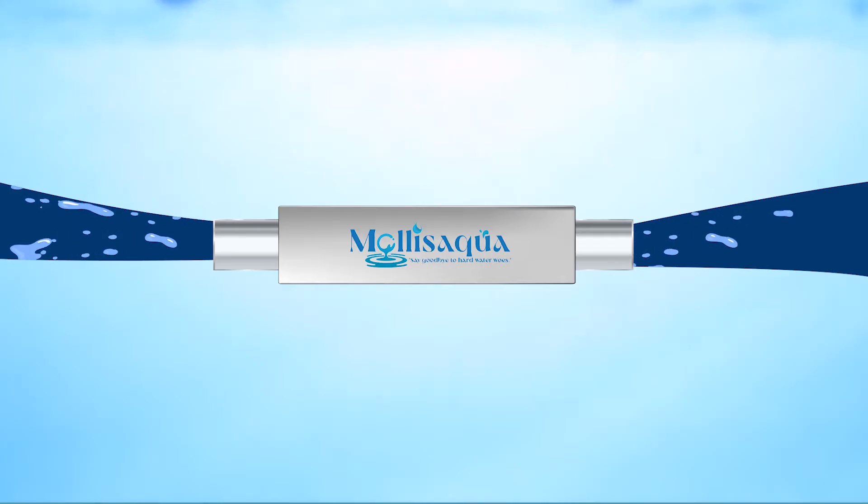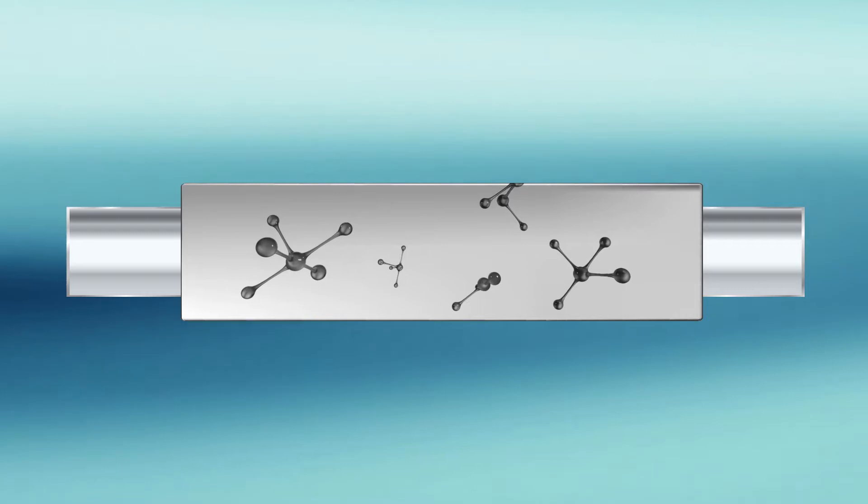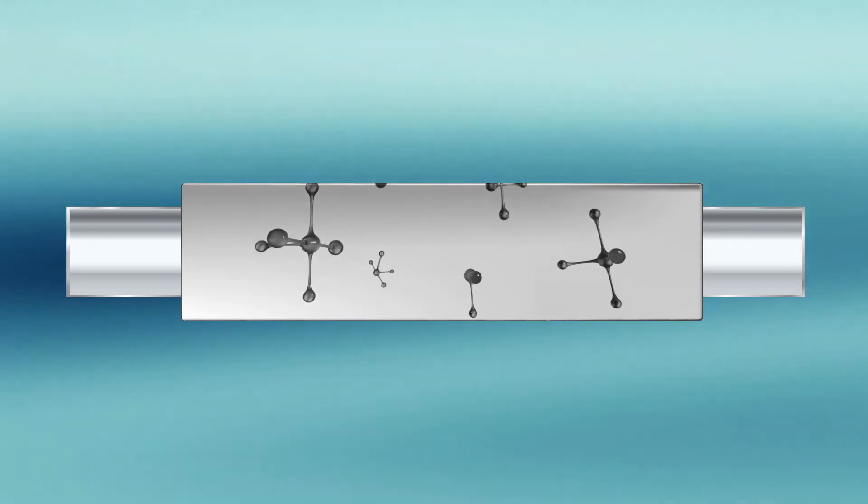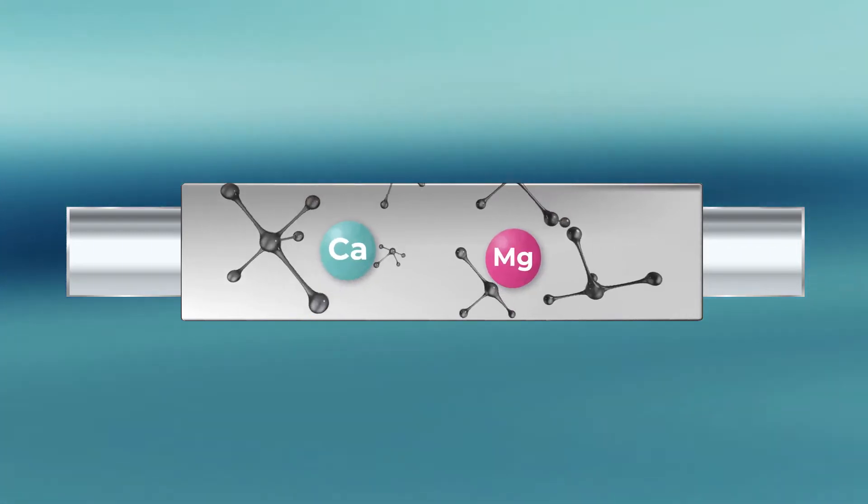As hard water flows through it, Mali's Aqua separates the physical and chemical properties of hard water, making it softer and significantly reducing its hardness. Operating on a redox reaction, Mali's Aqua neutralizes calcium and magnesium elements present in the water.